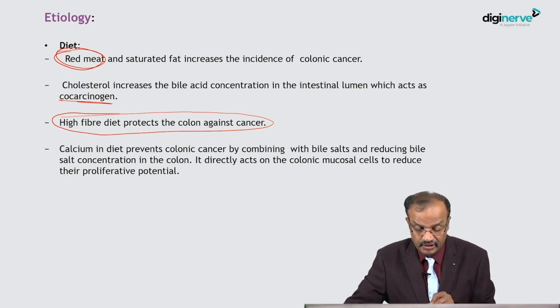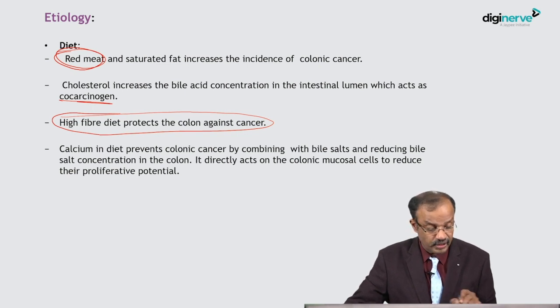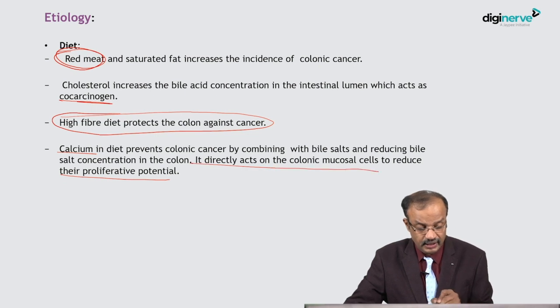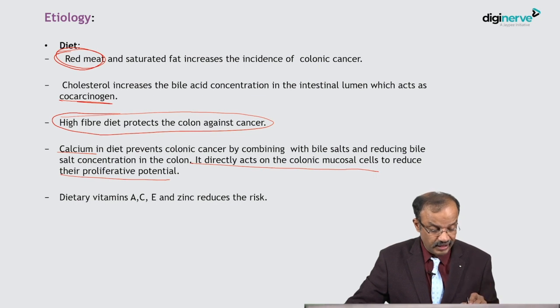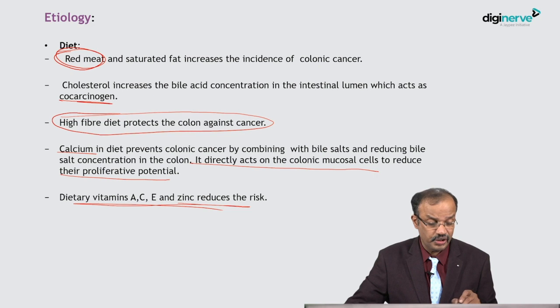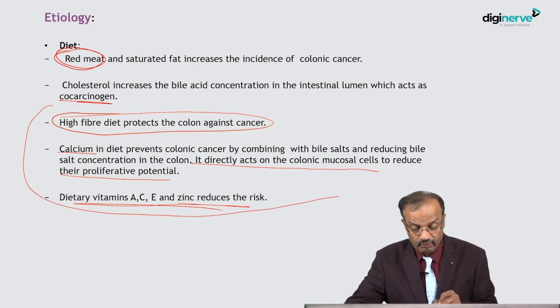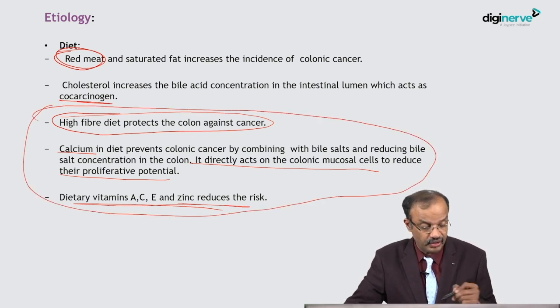High fiber diet always protects against colonic cancer. Calcium in diet prevents colonic cancer by combining with bile salts and reducing bile salt concentration in the colon. It also directly acts on colonic mucosal cells to reduce their proliferative potential. Calcium is very good for the colon and prevents colonic malignancy. Dietary vitamins A, C, E and zinc also reduce the risk — all are protective factors.